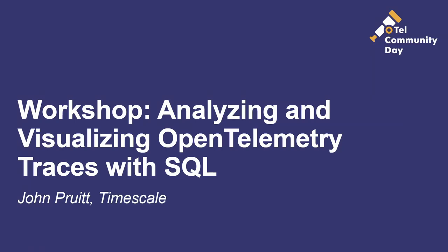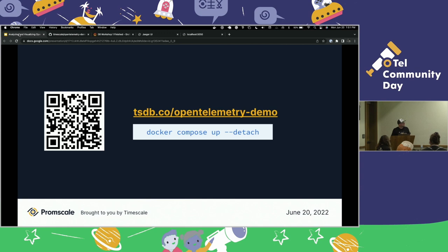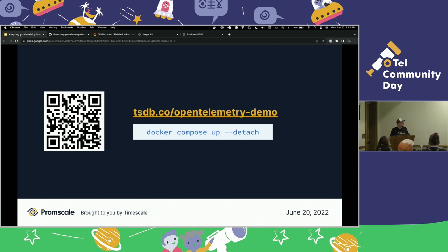Welcome to the workshop. This is intended to be hands-on, so if you want to follow along, go ahead and go to this link either via the QR code or the link up there and download the repo, then run docker-compose up in the root of the repo. You'll be deploying a system that we will use to build some Grafana dashboards and explore traces. I don't know how slow the Wi-Fi is here, so go ahead and kick it off now and you'll be ready when we're ready.